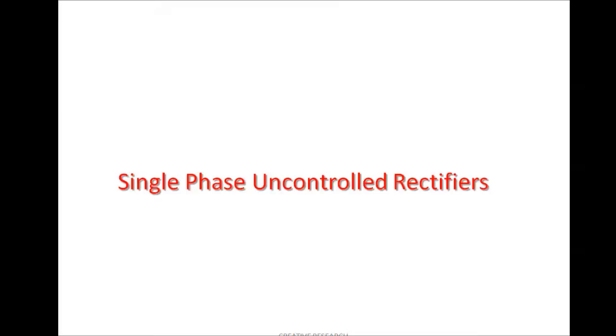A fully controlled rectifier is totally controlled by thyristors, and a half controlled rectifier is controlled by thyristors as well as diodes — meaning the circuit consists of both thyristors and diodes. We will discuss this in further sections. So now we have an idea of what uncontrolled, fully controlled, and half controlled means.